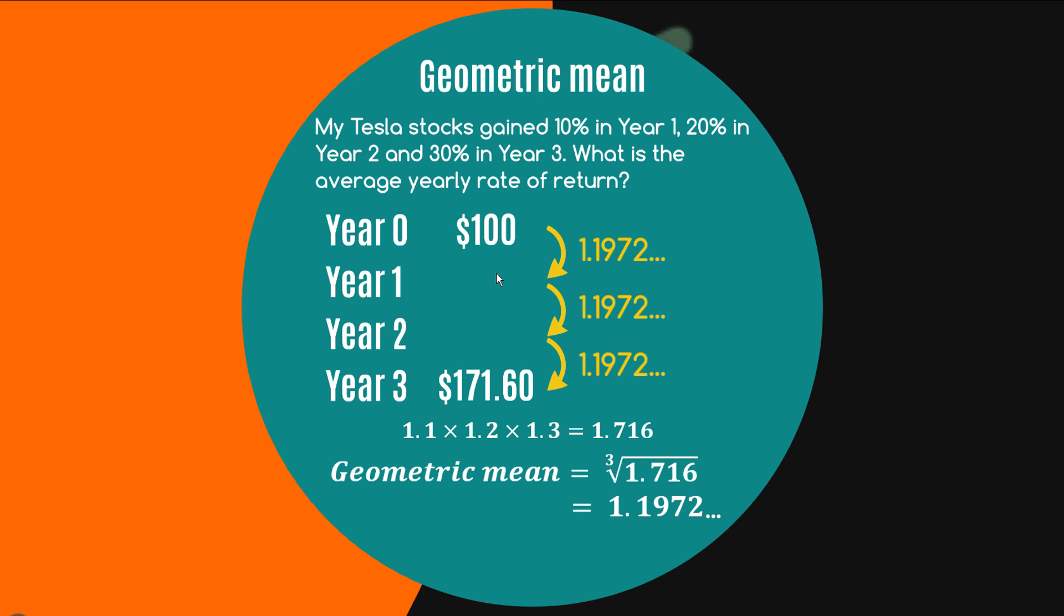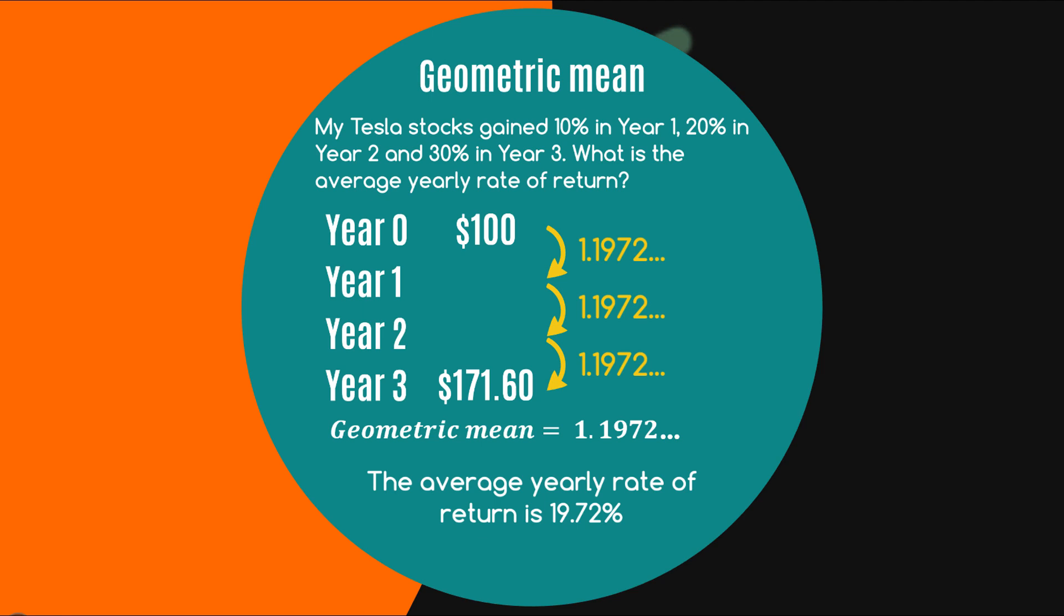Which happens to be 1.1972 so in other words if you needed to get from $100 to $171.60 in three years you could multiply by 1.1972 three times that means that our average yearly rate of return is 19.72 percent you can lop off that first one point and have a look at just the increase which is 19.72 percent.